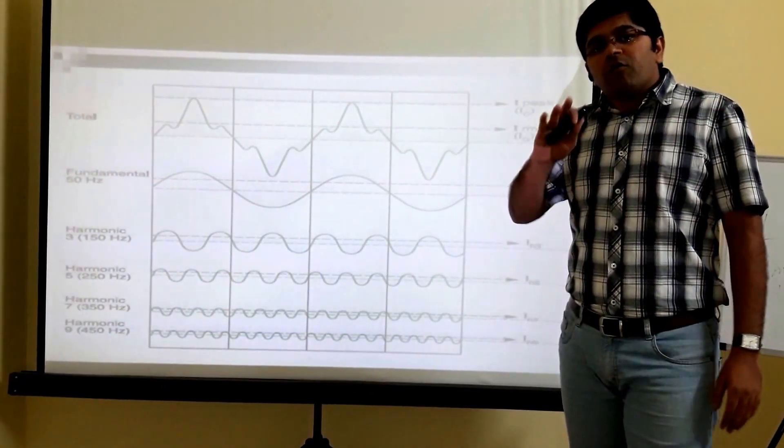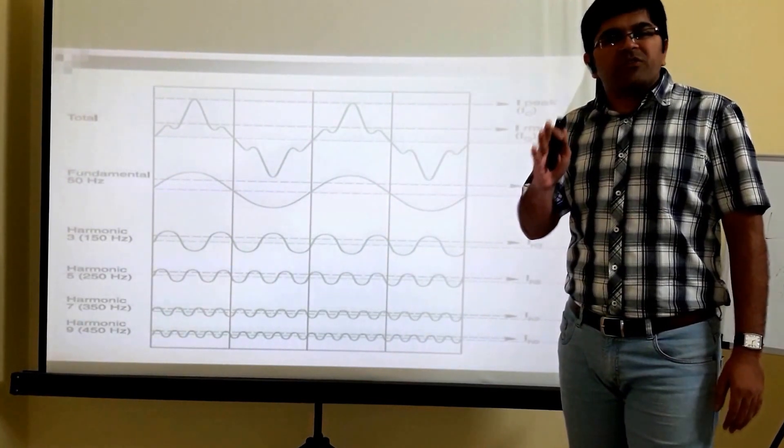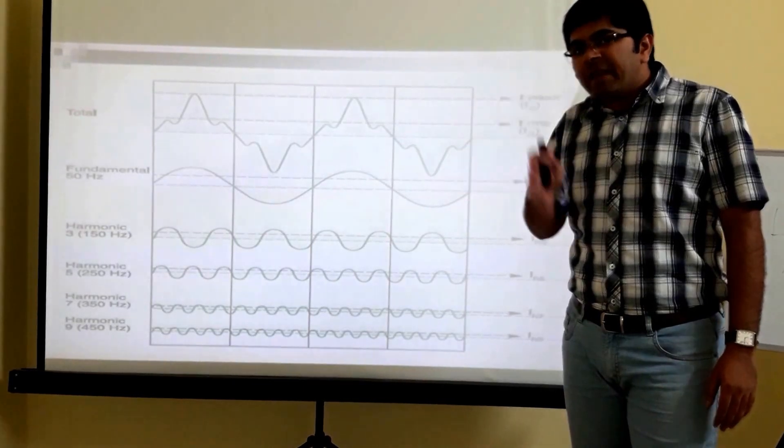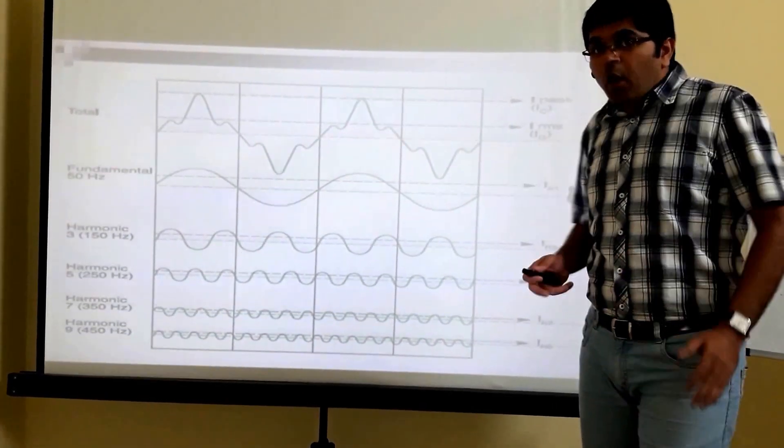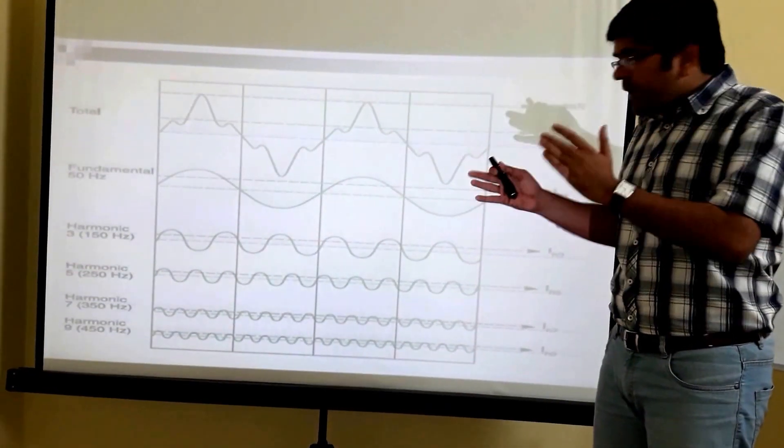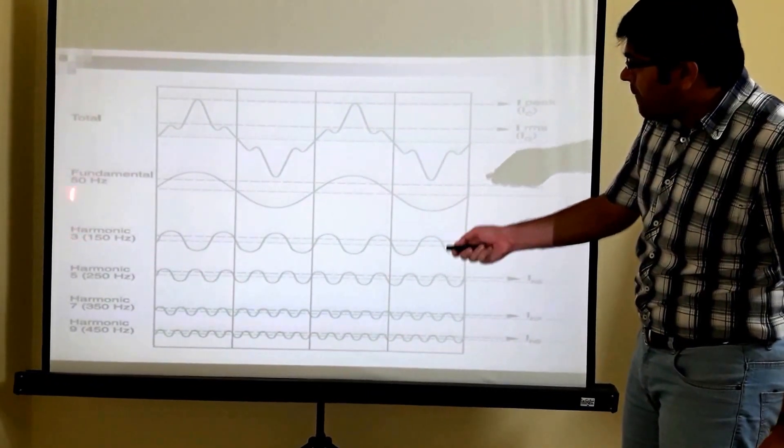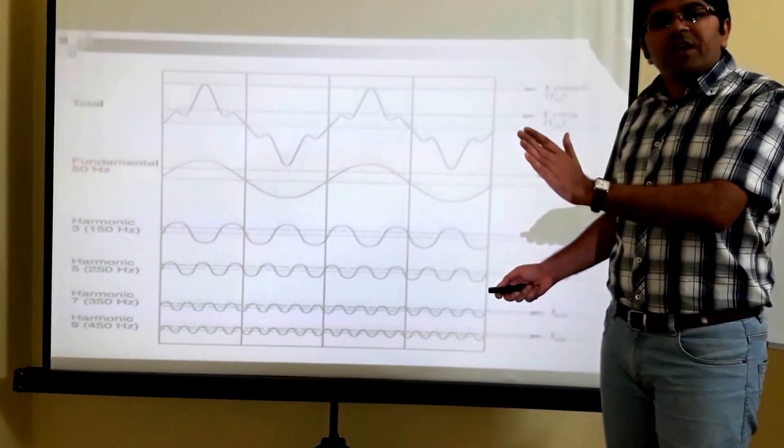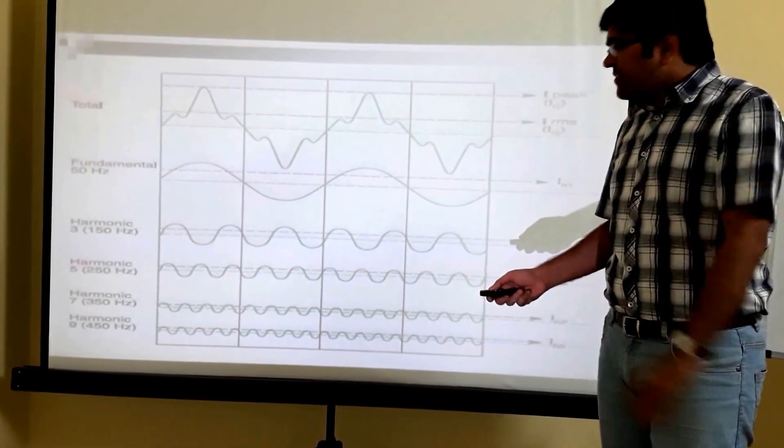We know that fundamental frequency 50 Hz means 50 cycles in a second. Now, integer or multiple of fundamental frequency means suppose we have integer 3, harmonic order 3, multiply by 50, that makes 150 Hz, 150 cycles in a second. So that makes this waveform like this.